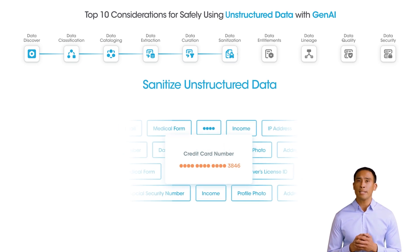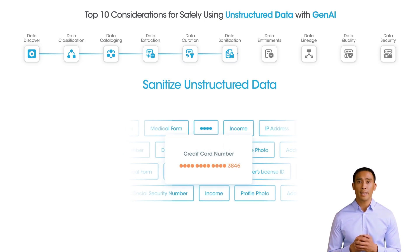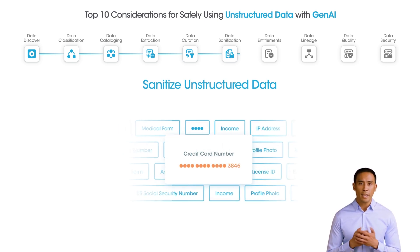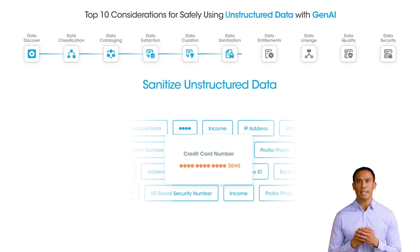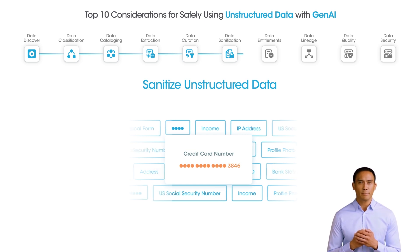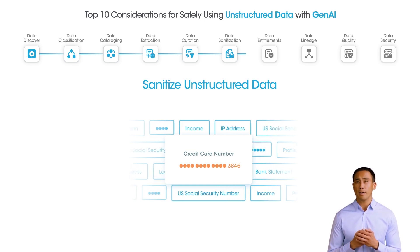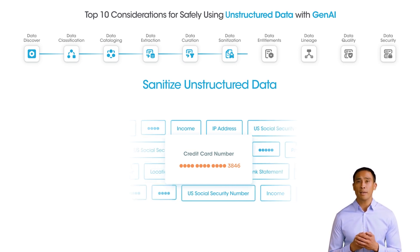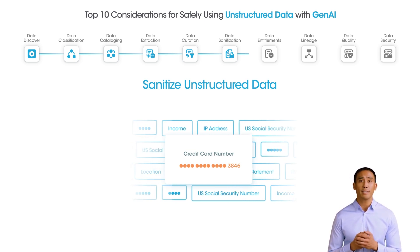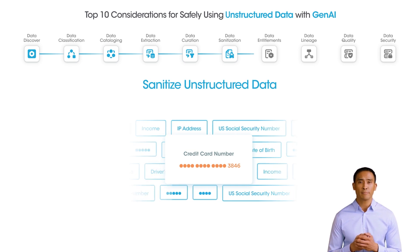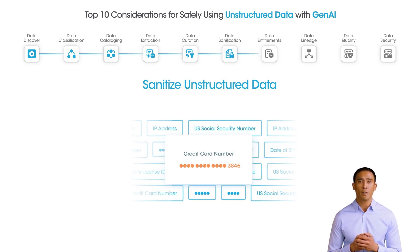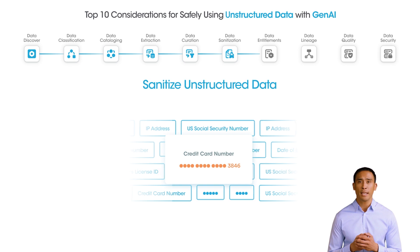Unstructured data can contain PII and sensitive information, and there is always a risk of accidentally exposing it. Before feeding data to AI models, some level of sanitization, such as redaction or masking of sensitive data, may be needed to reduce the risk of privacy and compliance issues in Gen AI applications.